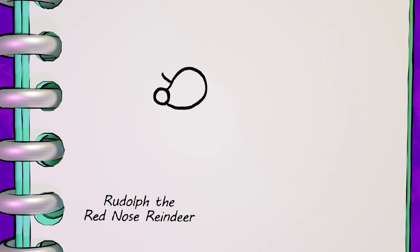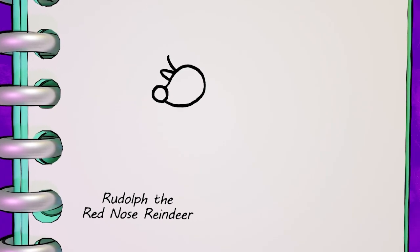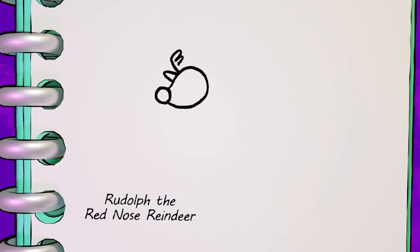Next, we'll draw a little curve here for one of his ears. Then you can imagine his antlers as a sort of letter F shape.